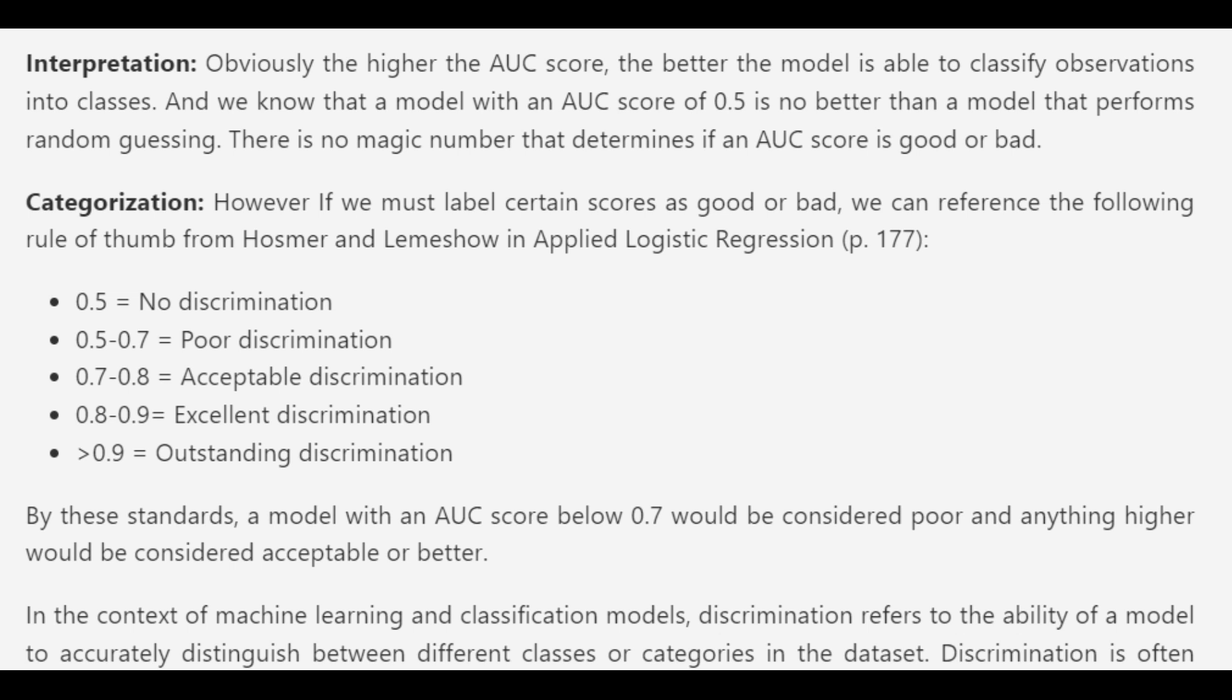Categorization: here is the rule of thumb for the categorization of the AUC score as poor discrimination, acceptable discrimination, and so on as given by Hosmer and Lemeshow in Applied Logistic Regression page 177.